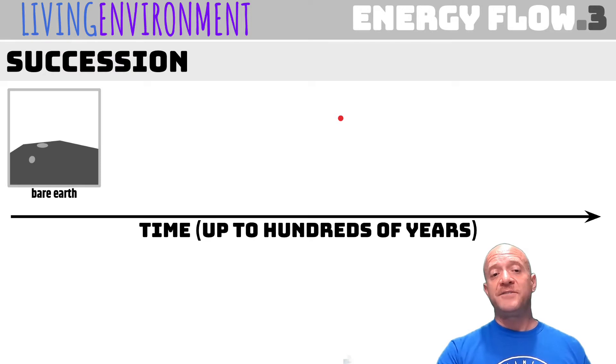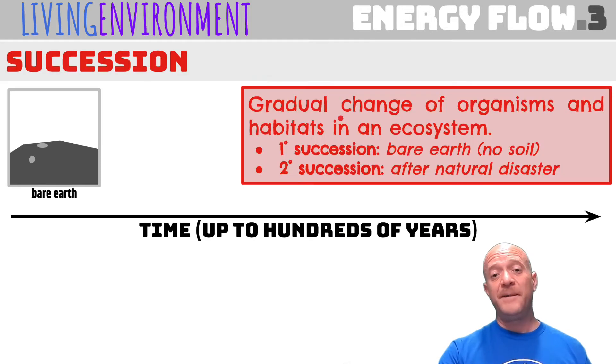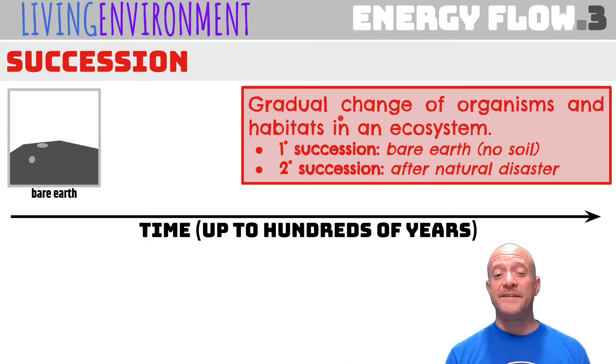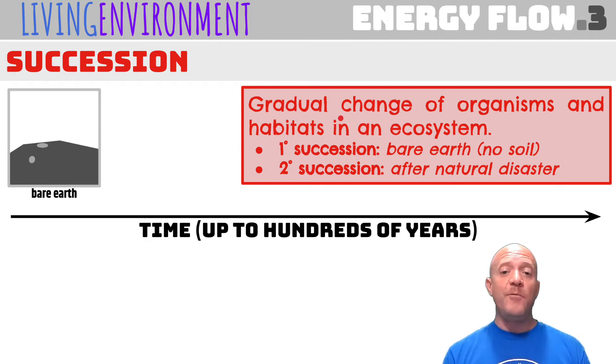Ecological succession, simply put, is the gradual change of organisms and habitats in an ecosystem. And we have two types: primary succession and secondary succession.